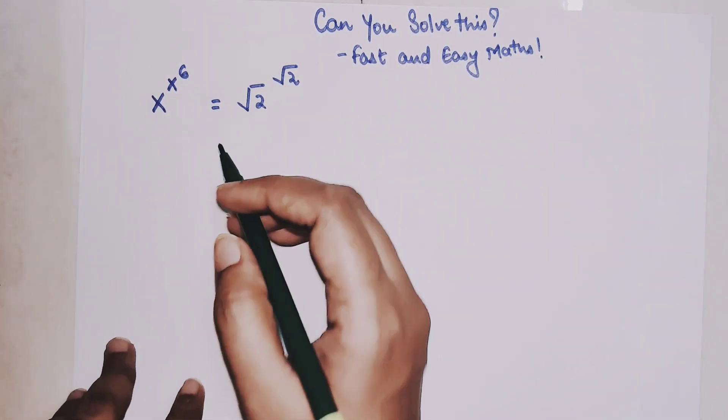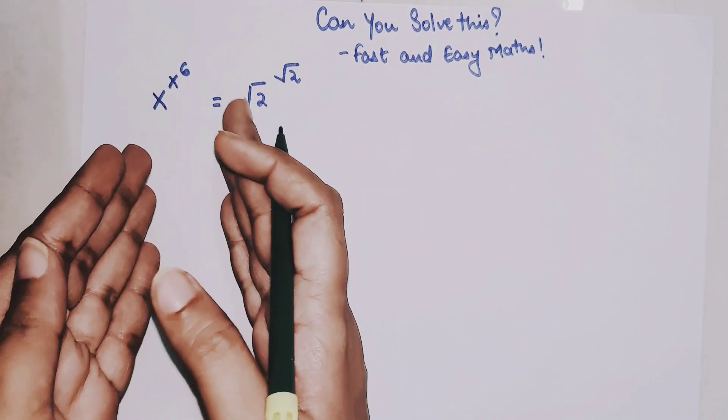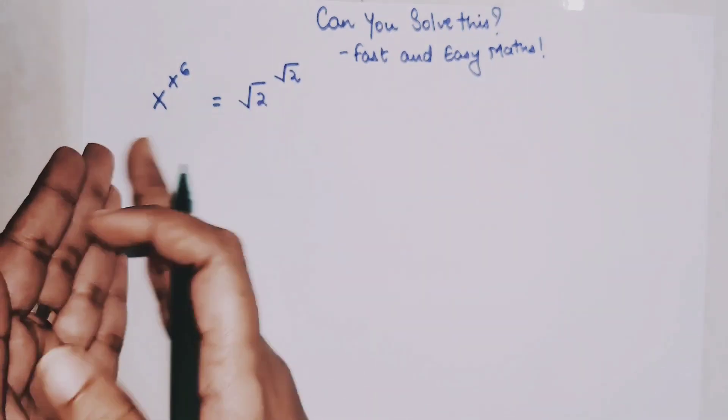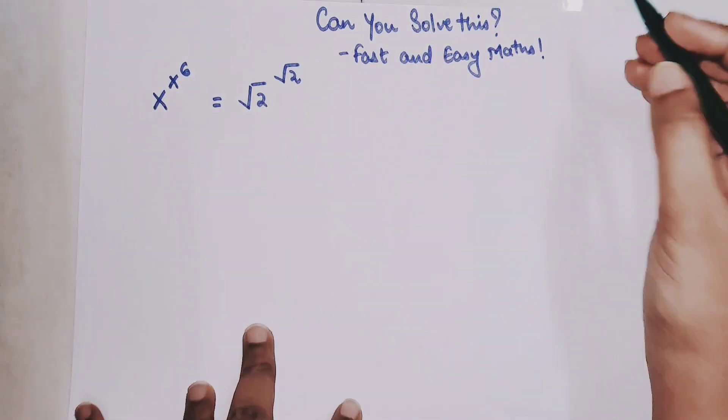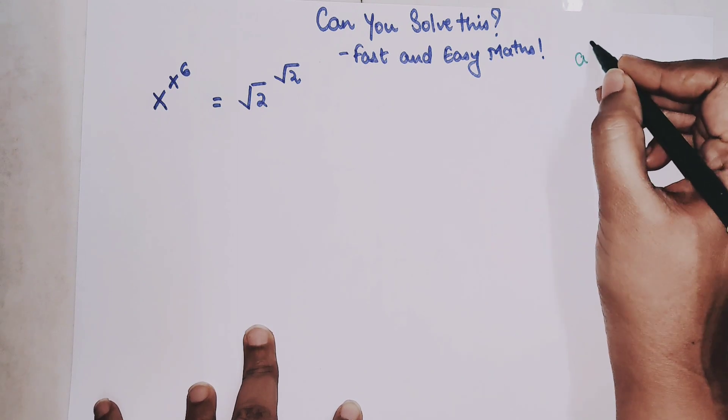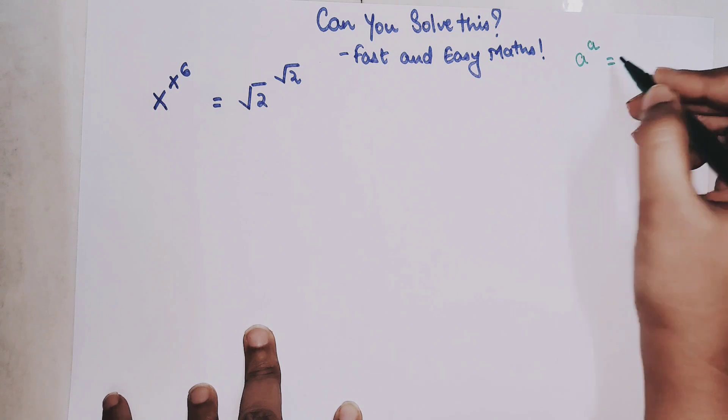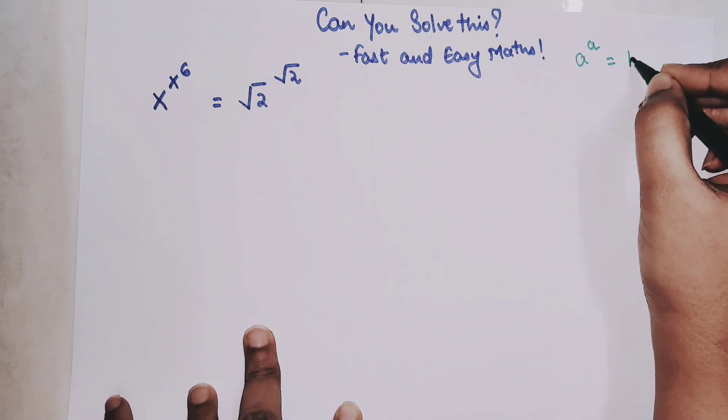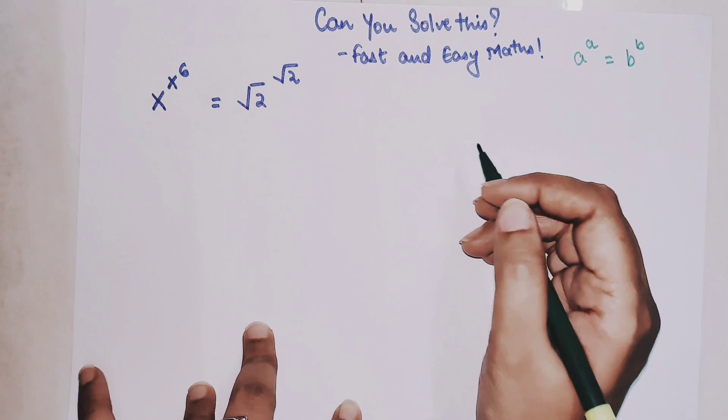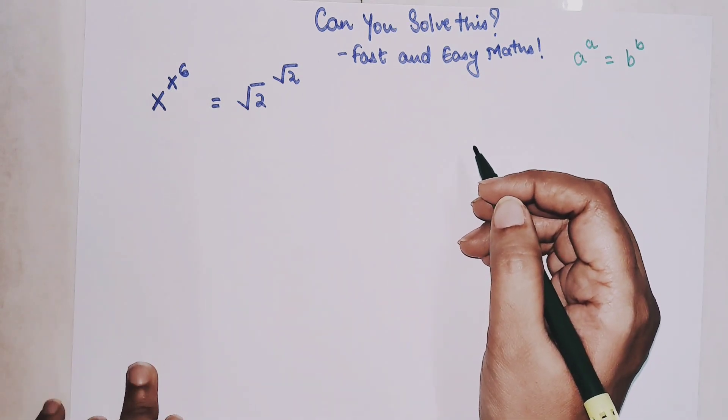So whenever you come across something like this, we will try to put x or the unknown part in the format where we have something like this, a raised to a. You know why? Because then we can arrange our RHS also in the form of b raised to b and from there we can equate and get our answer.